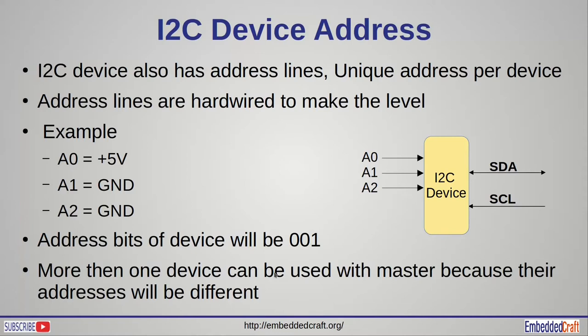We start by reviewing the address lines available on each I2C device. For example, this device has 3 address lines. We can hard-wire each address line either to ground or to VCC as per our choice. For example, if A0 is wired to 5 volts and A1, A2 are wired to ground, then the address bits will be 0, 0, 1. If you have another device on the same I2C bus, you can change the combination of these address lines. We can create a maximum of 8 combinations from 3 address lines.